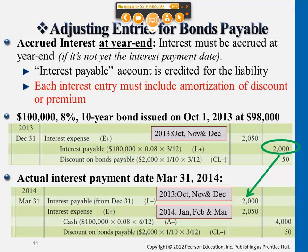Discount on bonds payable for this next-year entry will change to four months. Because we're accounting for 2014 — it will be four months, January all the way to the end of April. So if the issuance date is November 1st, for this year there will only be two months to account for, and for the following year there will be four months before we actually pay the interest. Interest will be paid on April 30th.